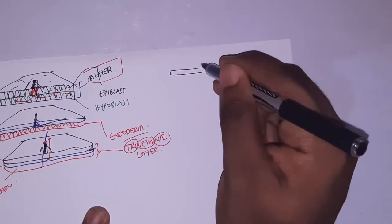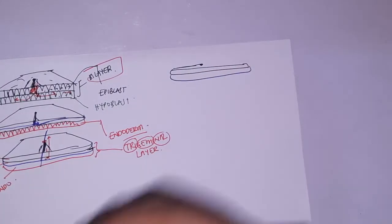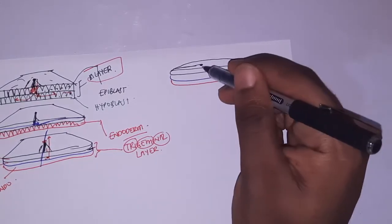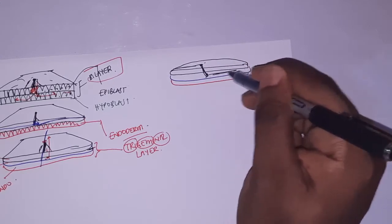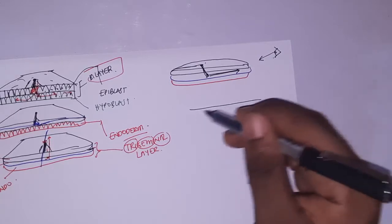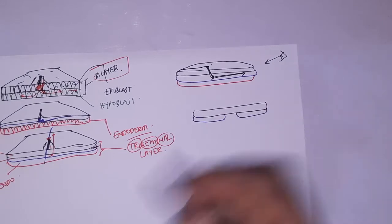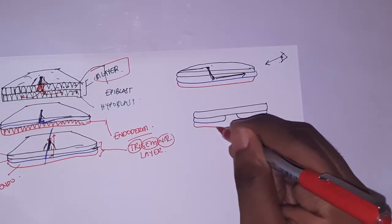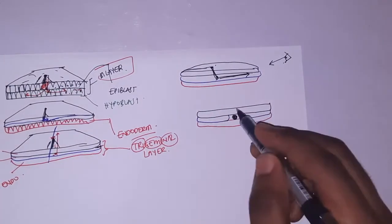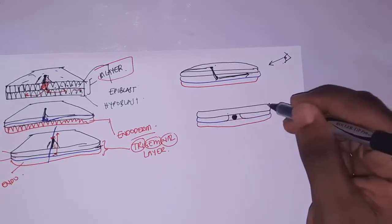Taking a cross-sectional cut, you can see the top layer with the primitive streak, the mesoderm layer, and the bottom layer. Some cells migrate through the primitive streak and travel upwards within the mesoderm. These migrating cells form what we call the notochord — a distinct stacked layer within the mesoderm.